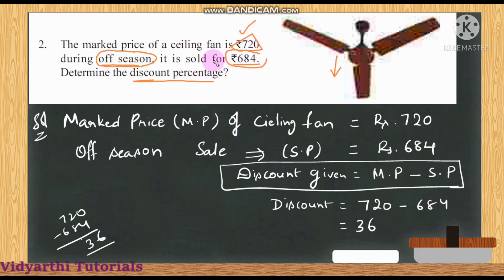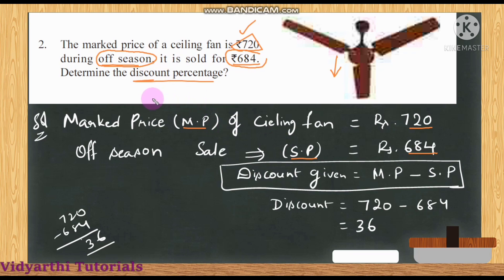Let us write what is given in the question. Market price of ceiling fan is ₹720. Off-season selling price is ₹684. We need to find the discount percentage. Using the formula: discount percentage = discount ÷ market price × 100, and discount = market price − selling price.